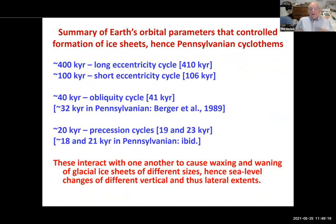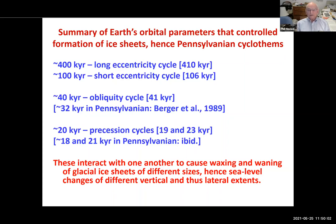Now I want to talk about the Earth's orbital parameters controlling formation of ice sheets — at least part of the control — hence the Pennsylvanian cyclothems. The 400,000-year and 100,000-year eccentricity cycles, the 40,000-year obliquity cycle (considered 32,000 years in the Pennsylvanian), and the 20,000-year precession cycles all interact with one another to cause waxing and waning of glacial ice sheets of different sizes, hence different sea level changes in terms of vertical change, which produce lateral extent change.